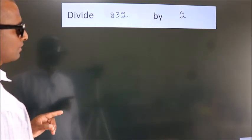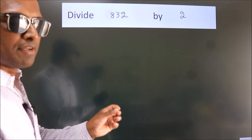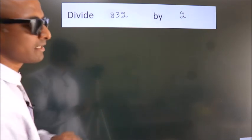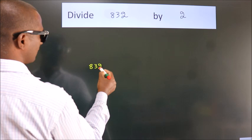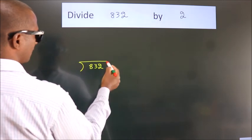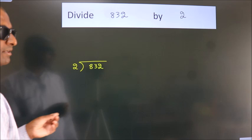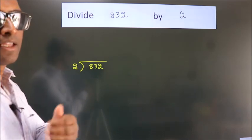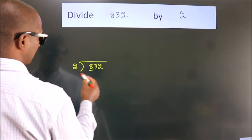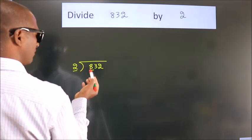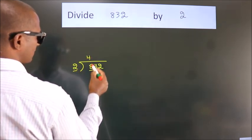Divide 832 by 2. To do this division, we should frame it in this way: 832 here, 2 here. This is your step 1. Next, here we have 8. 2 into what gives us 8? In table 2, 4 times 2 is 8.